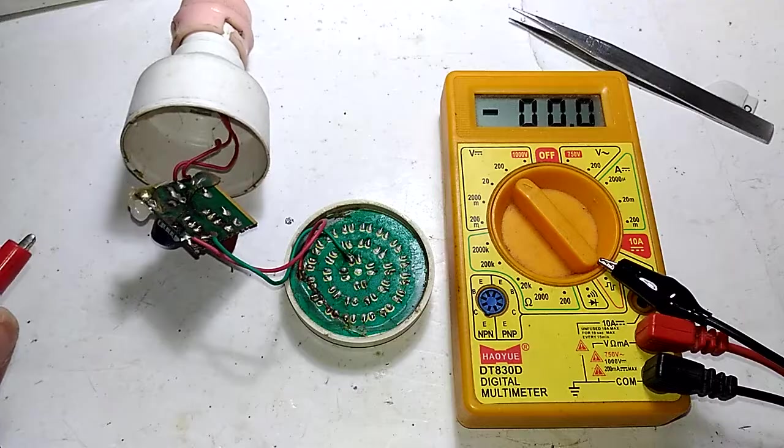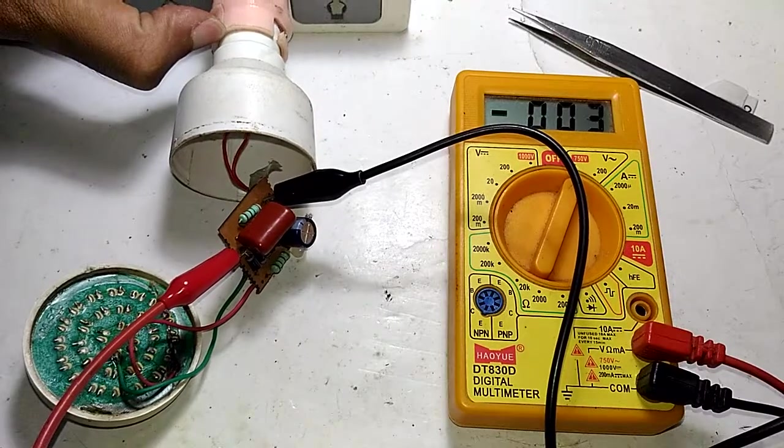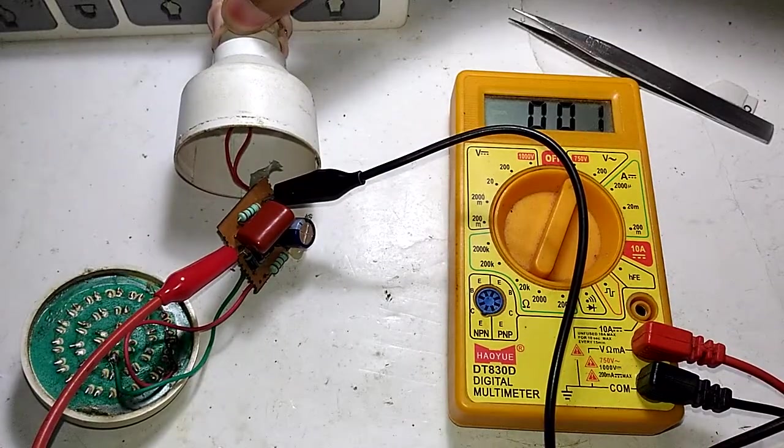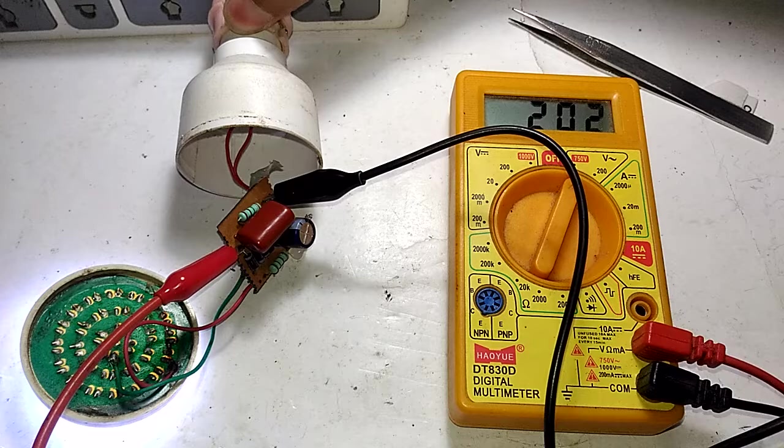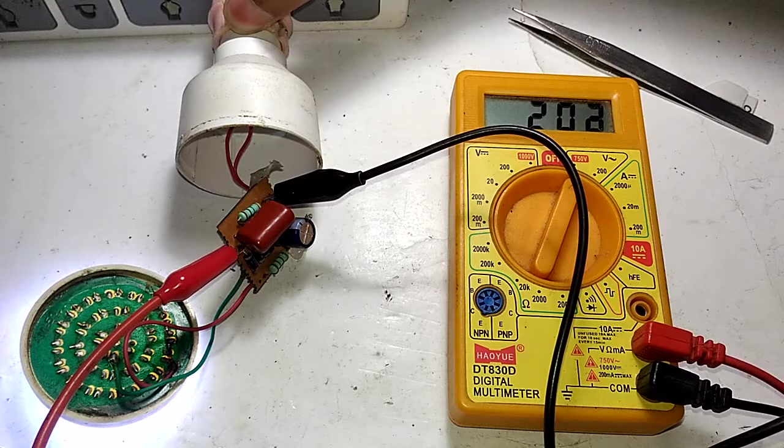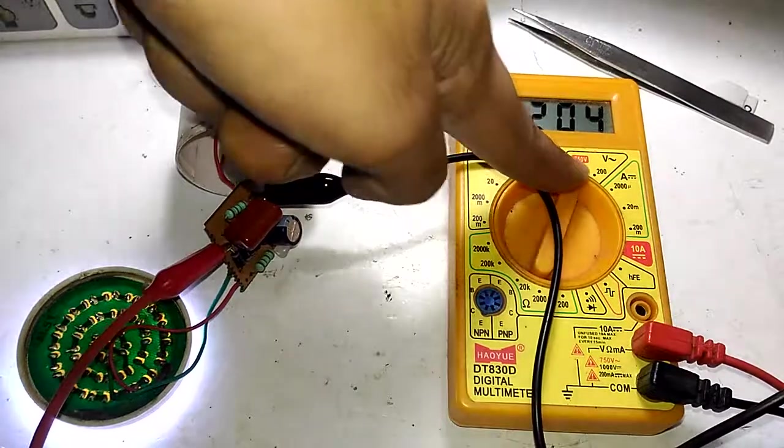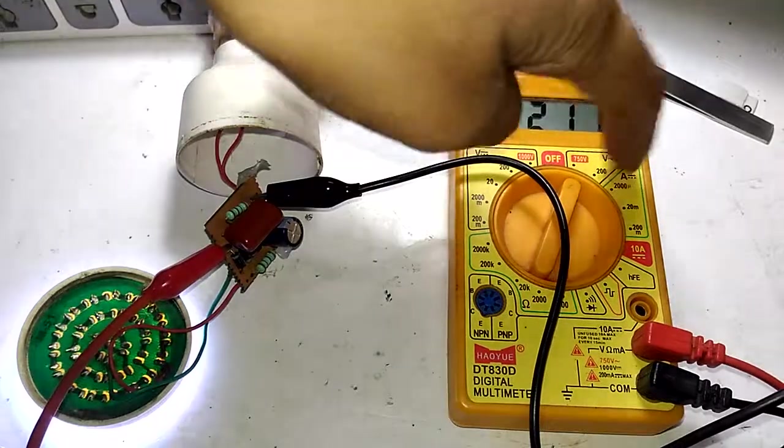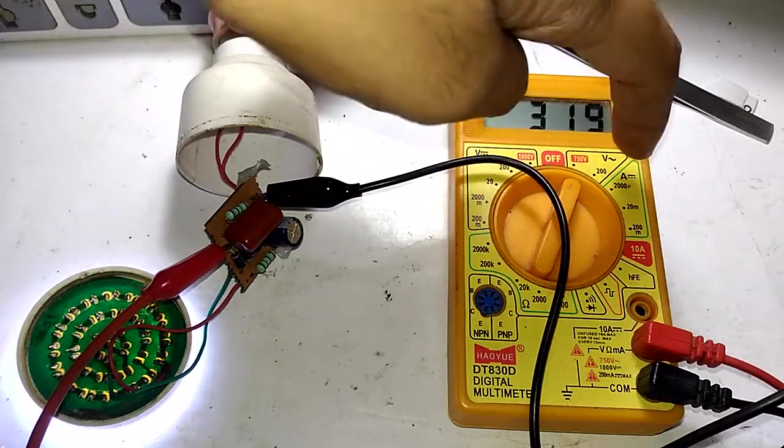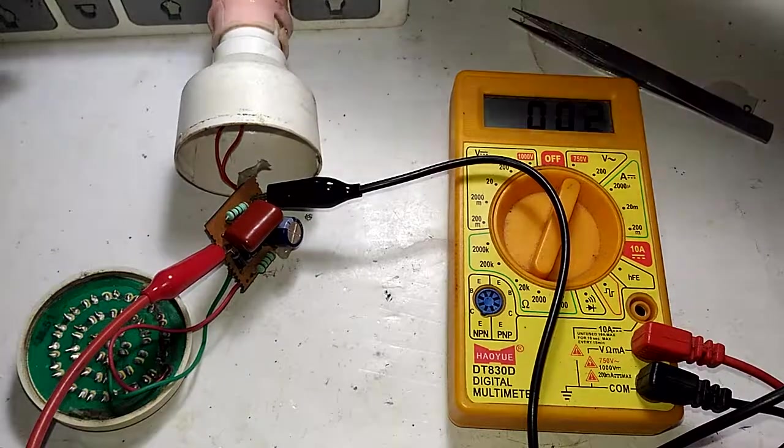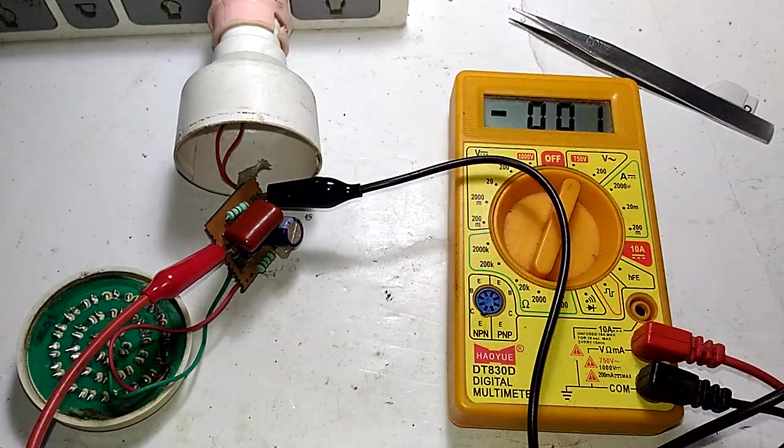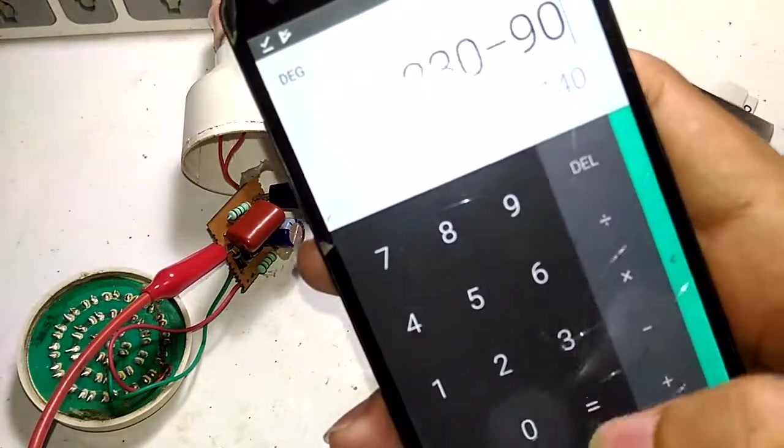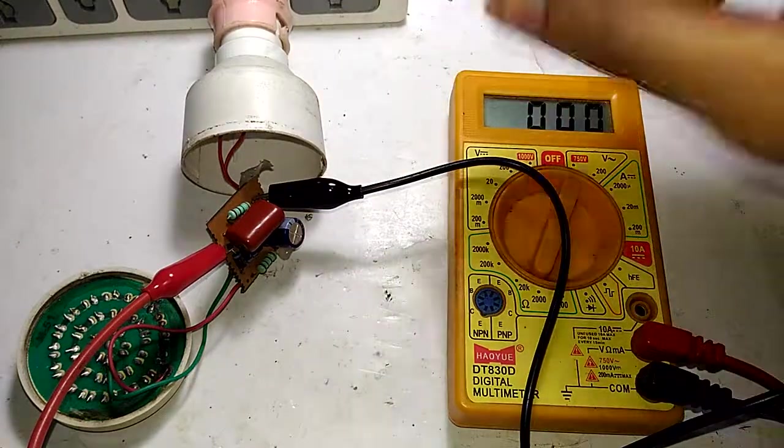Now I have connected the multimeter across the capacitor. Let's see how much voltage is dropped across that - around 200 volts. That's not exactly right because here in India it's around 230 volts. Something is messing up with my meter - it's a really crappy meter. But anyways, 230 volts minus 90 volts gives 140 volts dropped across that resistor.